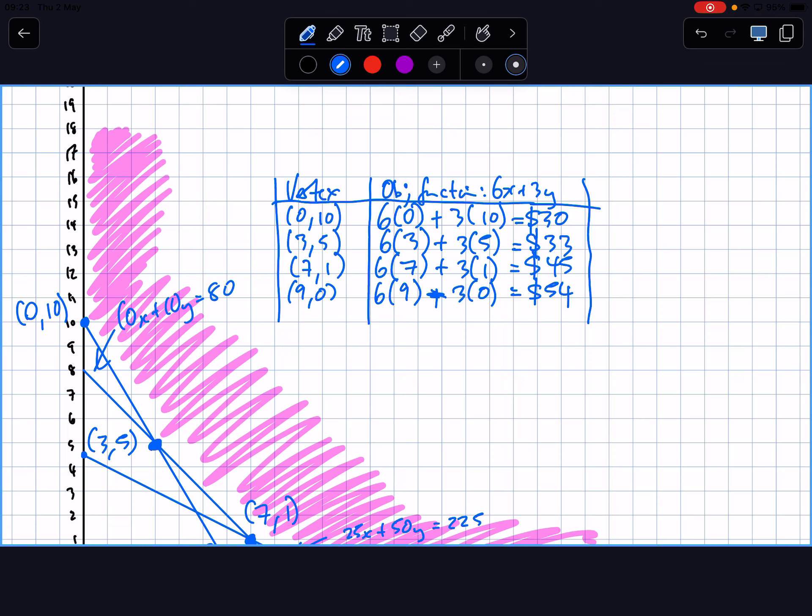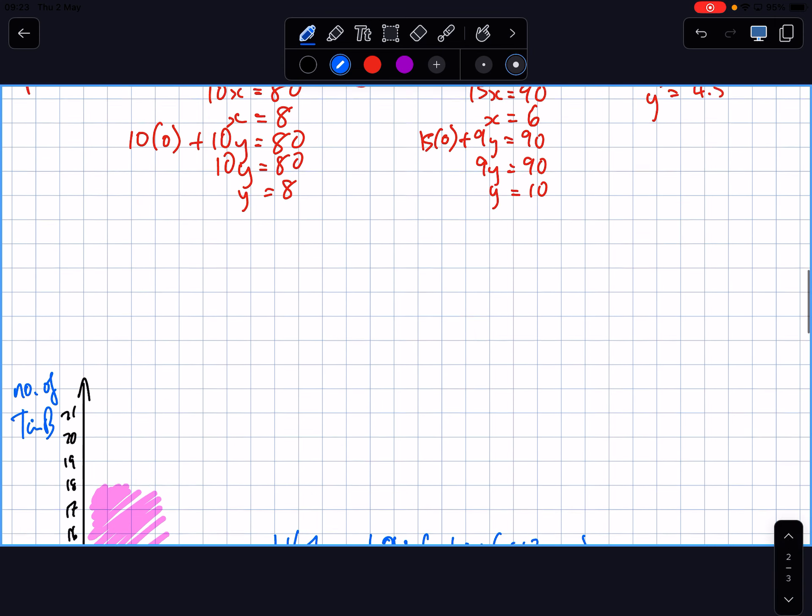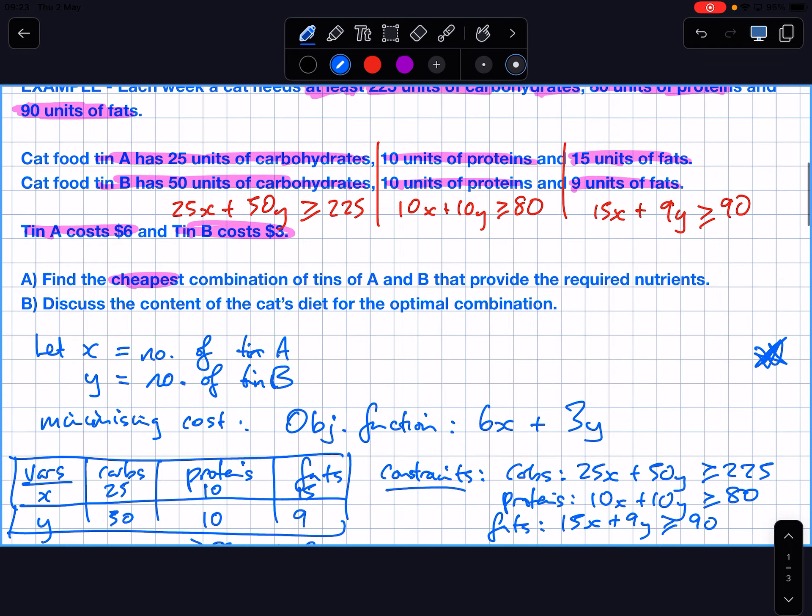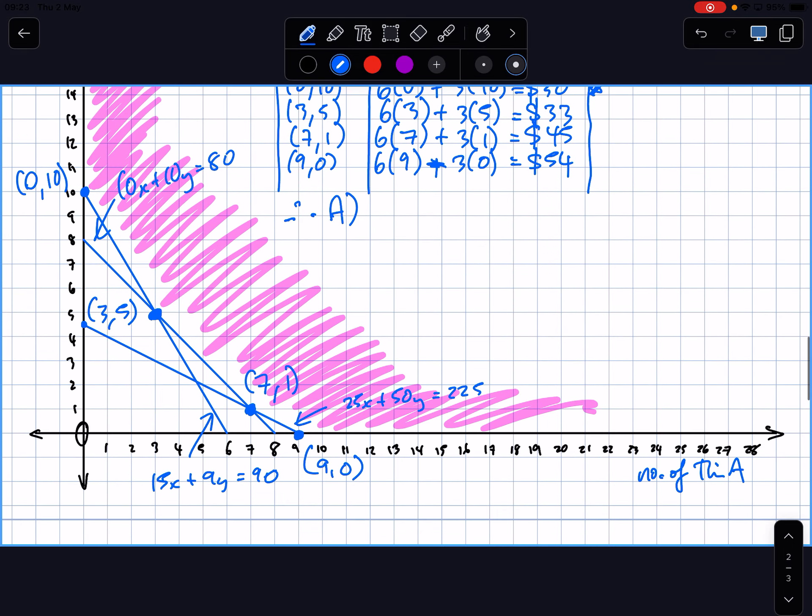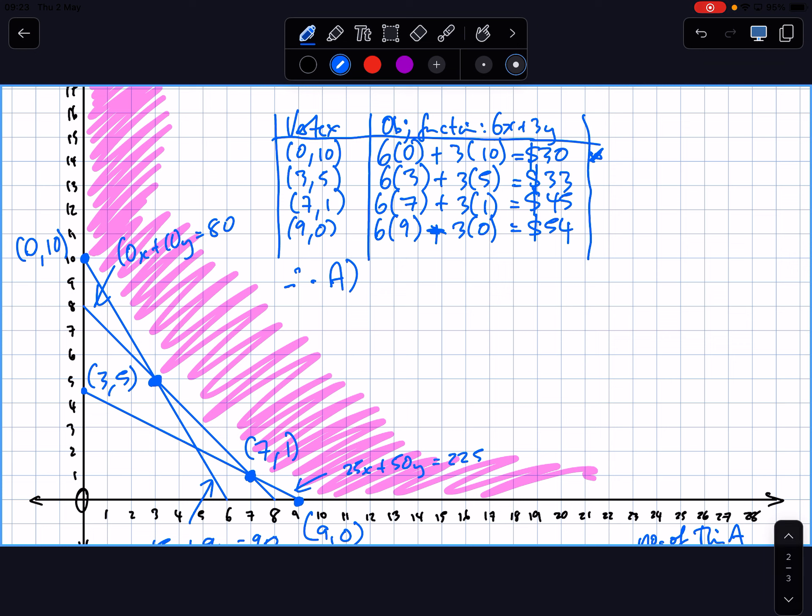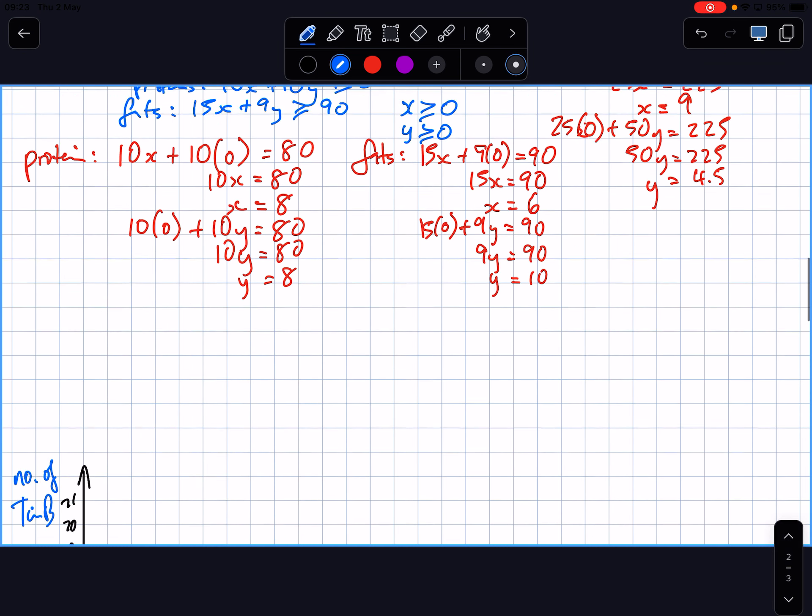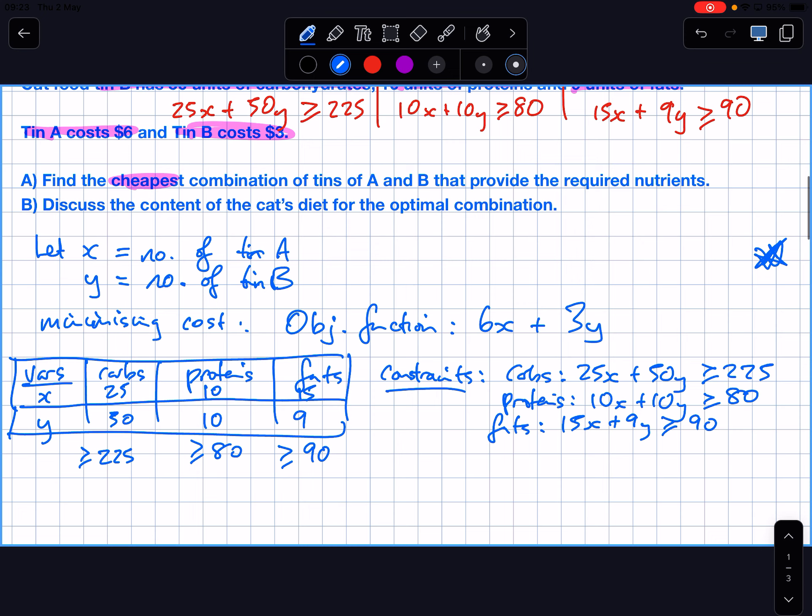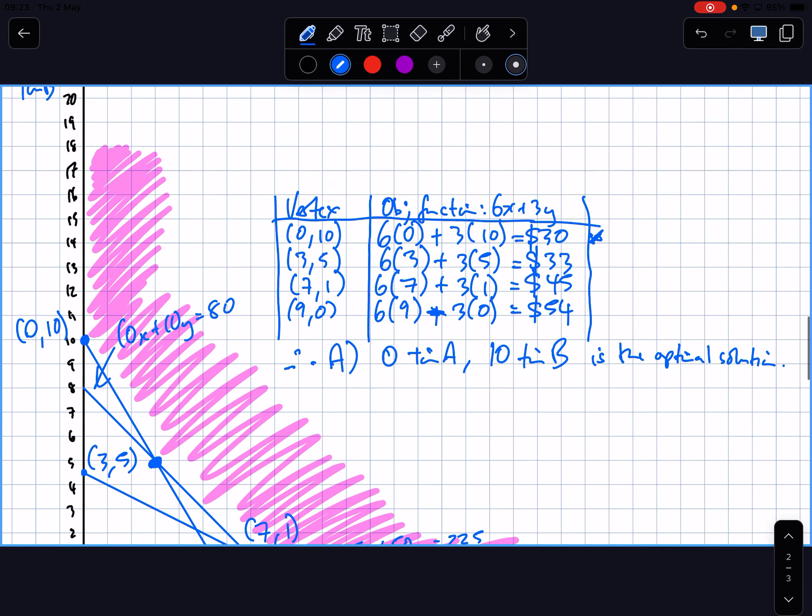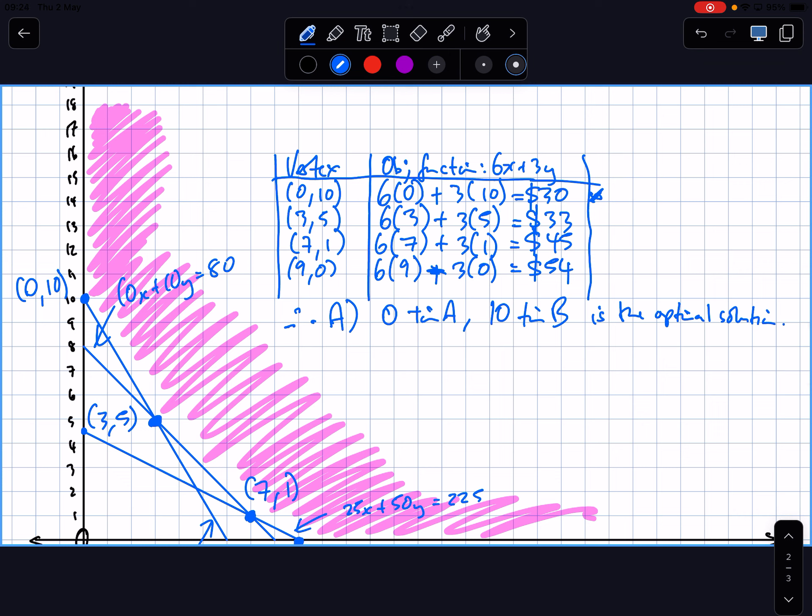According to that table which is the optimal solution? (0, 10). Good. So you put a star next to that. Therefore answering A, what's the optimal solution? 0 tin A, 10 tin B is the optimal solution. You could chuck in $30 there if you wanted.